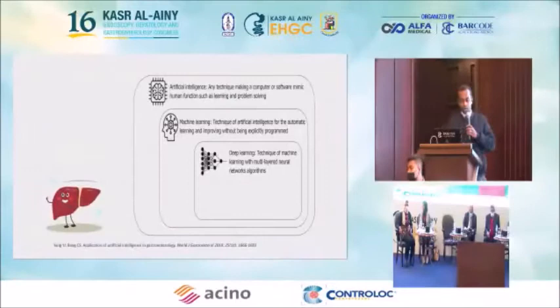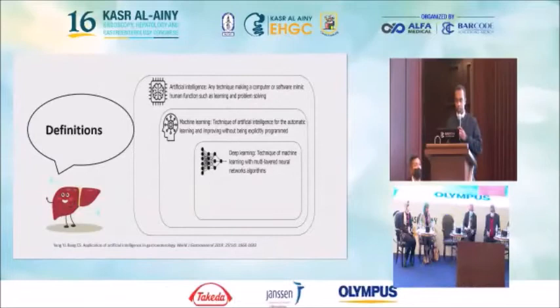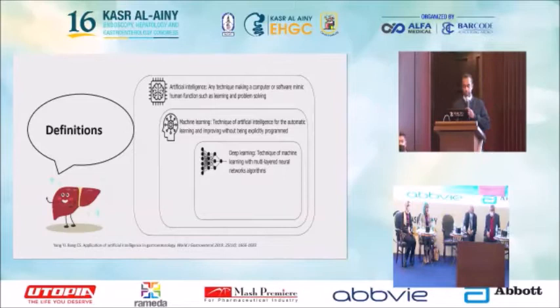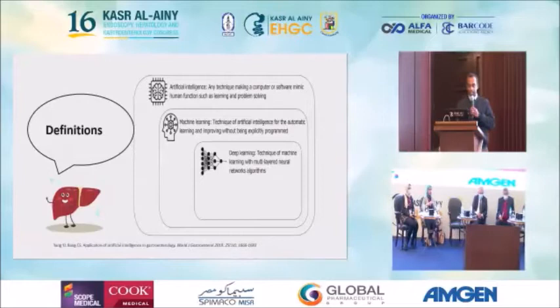I would like to start with some definitions that will help us to go through the next few slides. What is artificial intelligence? This is a technique of making a computer or software mimic human functions such as learning and problem solving. Machine learning is a technique of artificial intelligence for automatic learning and improving without being explicitly programmed. Deep learning is a technique of machine learning with multi-layered neural network algorithms.